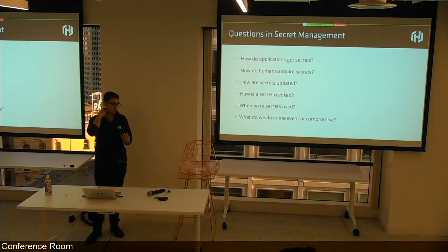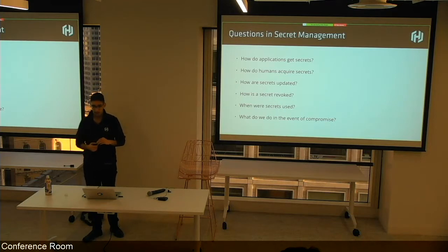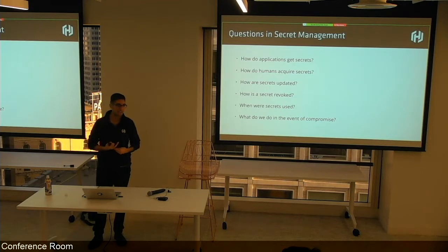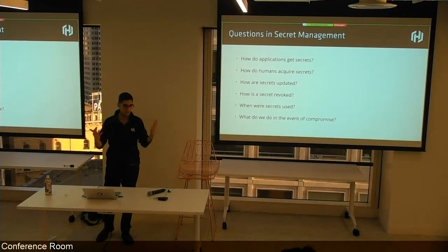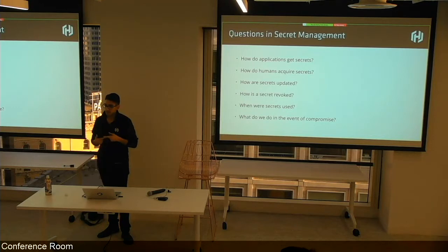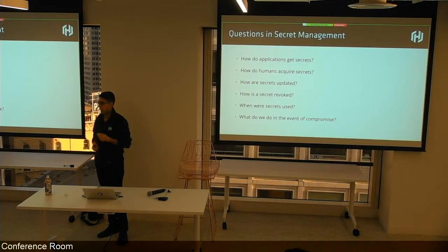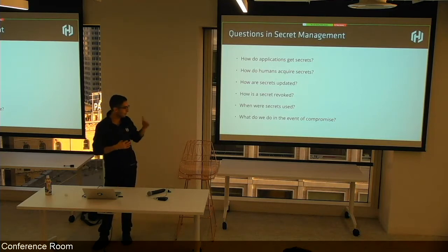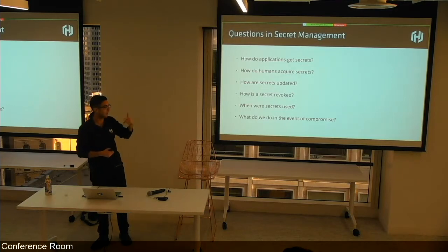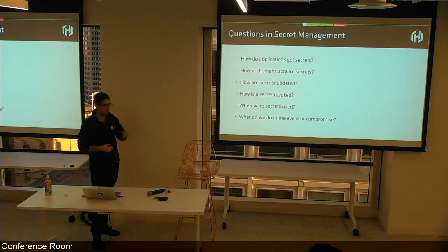What questions do we have to ask when thinking about secret management? The biggest one: how do our applications get their secrets, and where do our human operators get those secrets — is it a different location? How do we update those secrets? What do we do when we need to revoke them if something's been compromised? Do we have auditing or compliance requirements? And the meta-question that drives everything: what do we do in the event of a compromise? Assume the worst case and back out to what you wish you had done.